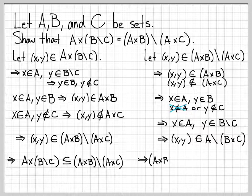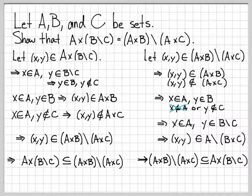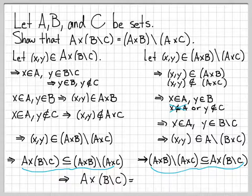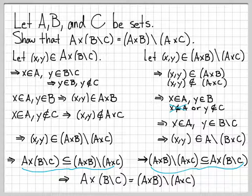So this means that the right-hand set is a subset of the left-hand set. We've now done both parts: from part one we established this subset relationship, and from part two we've established the other subset relationship. Since each is a subset of the other, these sets are actually equal to each other. All we've used here is the definition of a Cartesian product and the definition of a set difference to do this proof.